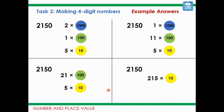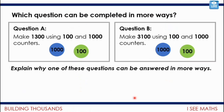Now let's go a little further. Have a look at these two questions — question A and question B. Which question can be completed in more ways, and how do you know? See if you can explain why one of the questions can be completed in more ways than the other. Pause the video and have a think.